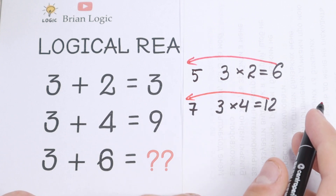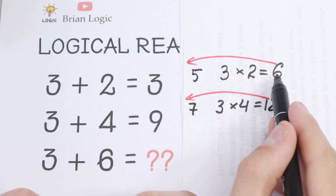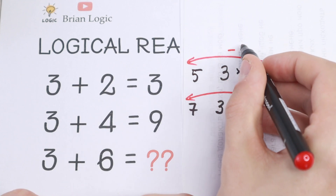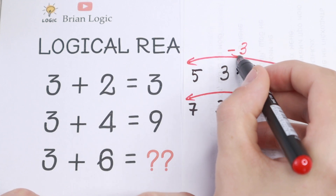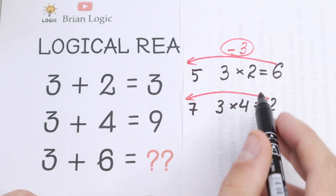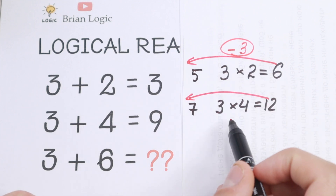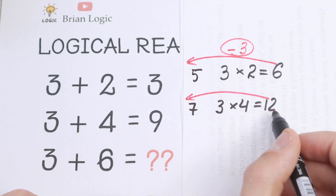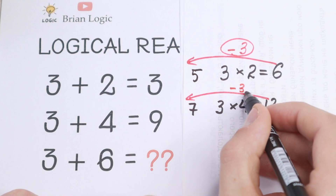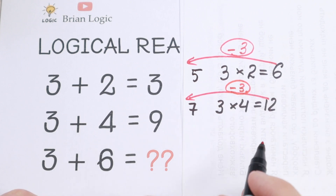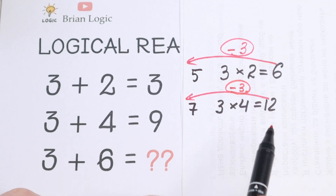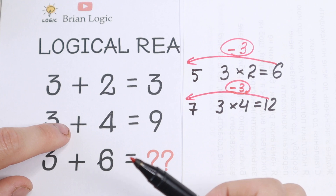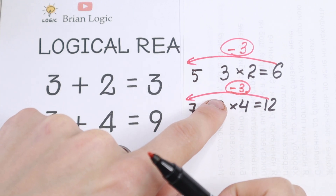Between 12 and 9 — if we subtract 3 from 6, we get 3. So 6 minus 3 equals 3. And if we subtract 3 from 12, we get 9. So the pattern is: multiply the two numbers, then subtract 3, instead of adding.